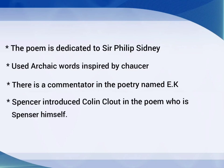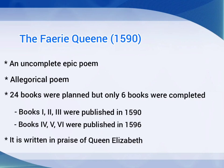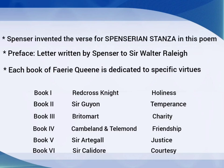The second important work of Edmund Spenser is The Faerie Queene, which was published in 1590. It is an uncompleted epic poem. 24 books were planned by Spenser, but only 6 books were completed. Books 1st, 2nd and 3rd were published in 1590, and the other 3 were published in 1596.